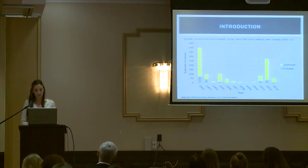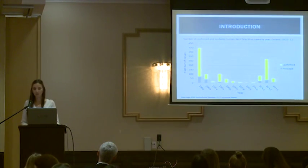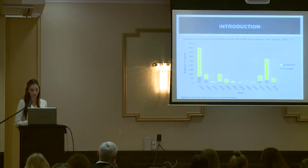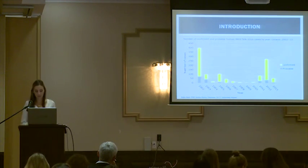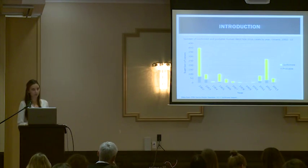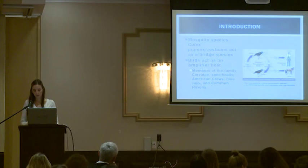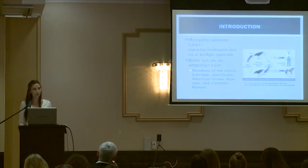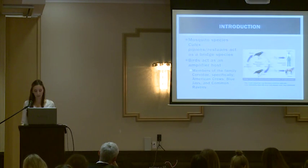This graph shows the cases between 2002 and 2013, both confirmed and probable cases. The yellow bars are confirmed, the blue ones are probable. We can see a big fluctuation — almost 400 cases in 2002, down to only two confirmed cases in 2010, followed by another spike in 2012 where we had about 270 cases. As Sean mentioned, the mosquito species in Ontario involved in transmission are Culex pipiens and Culex restorans.